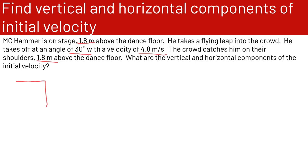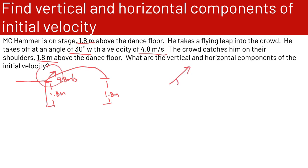We have the dance floor here, and MC Hammer starts at 1.8 meters. He takes off and flies into the crowd, also caught at 1.8 meters. His initial velocity is 4.8 meters per second. Zooming in on the launch, the angle is 30 degrees and the initial velocity is 4.8 meters per second. We want to break this into its components: Vx naught and Vy naught.